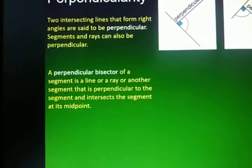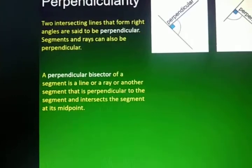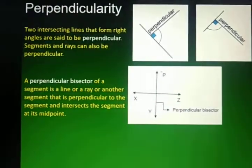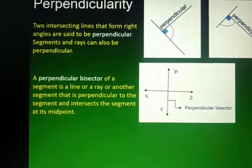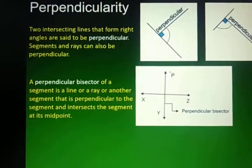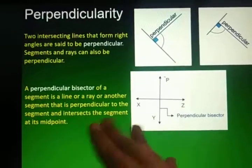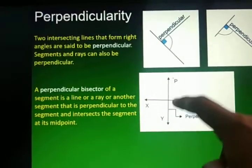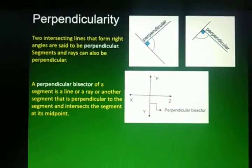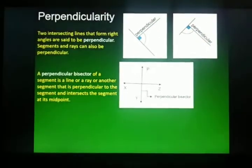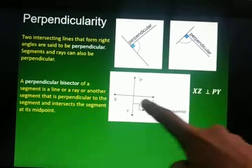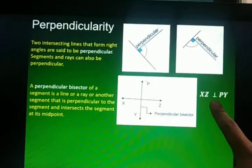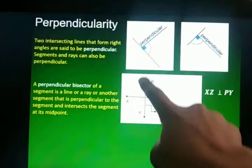A perpendicular bisector of a segment is a line, ray, or another segment that is perpendicular to the segment and intersects the segment at its midpoint. We can say that line PY is a perpendicular bisector of line XZ because it divides line XZ into two equal parts. They also form right angles. This is the symbol for perpendicularity: line XZ is perpendicular to line PY.